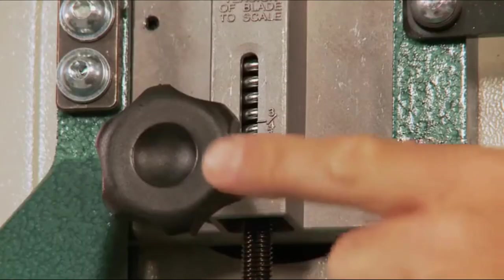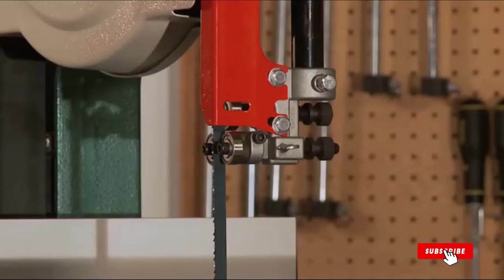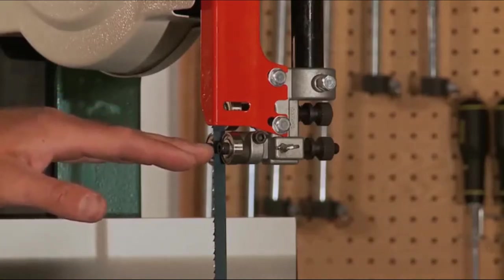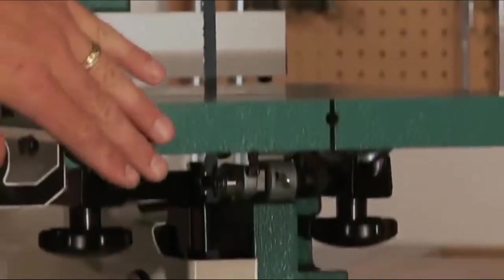Blade tracking is quick and easy using the knob located on the back of the bandsaw. This saw features ball bearing blade guides with fine adjustments and these support the blade both where the cut is being made above the table as well as below.